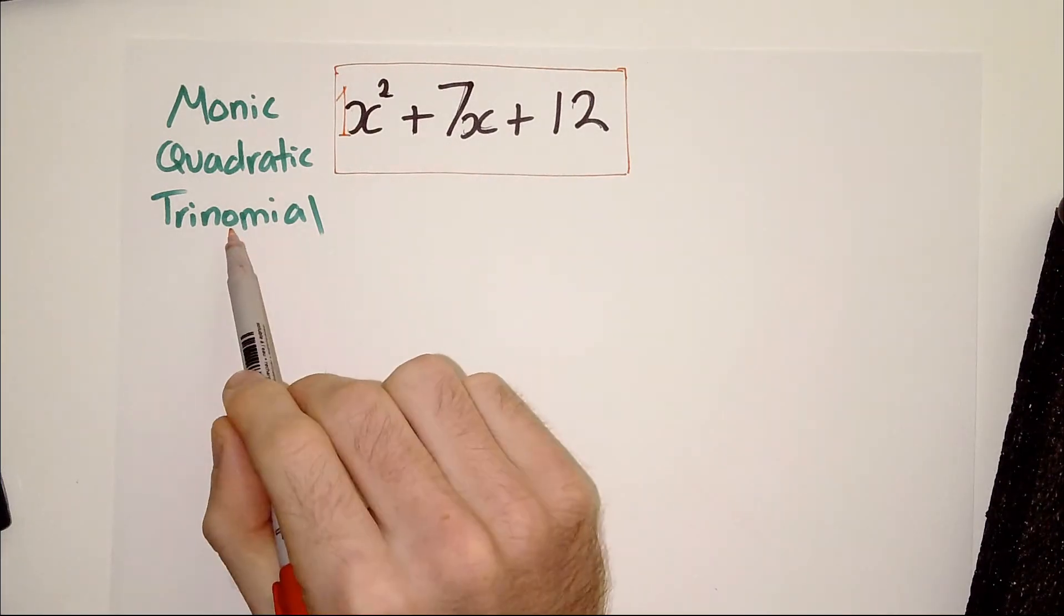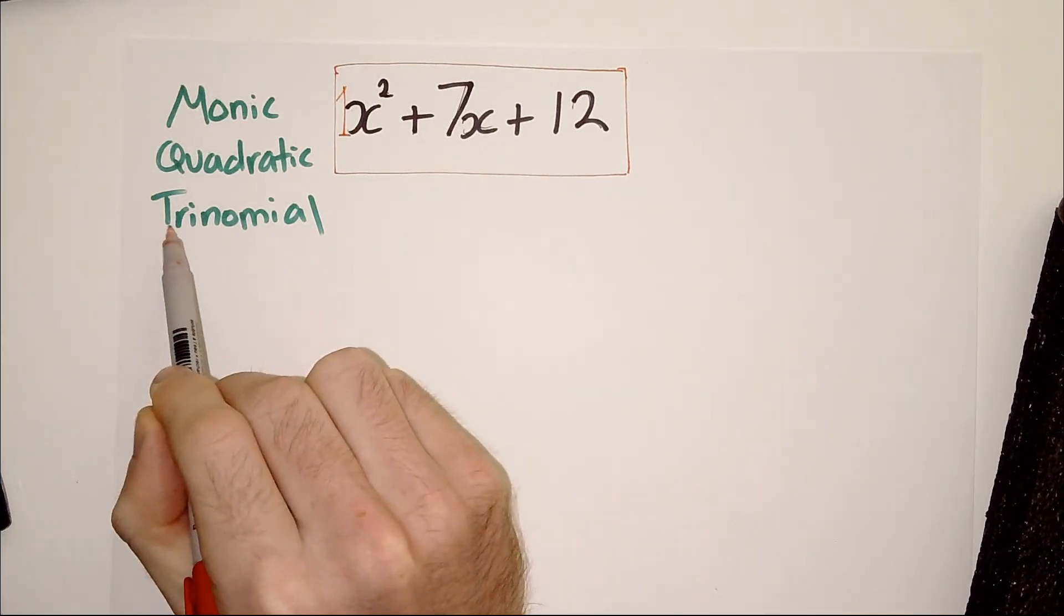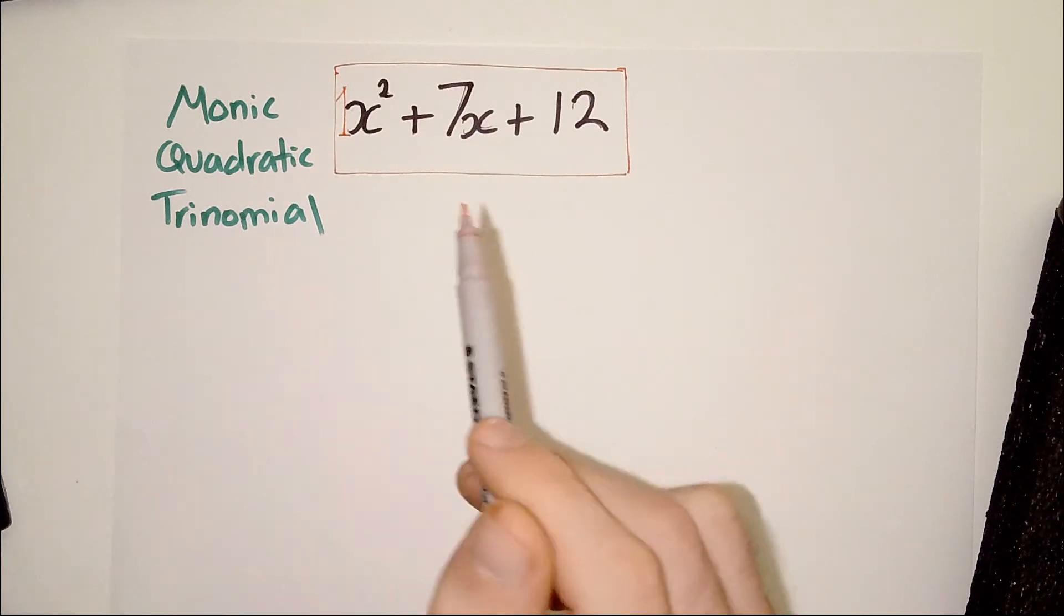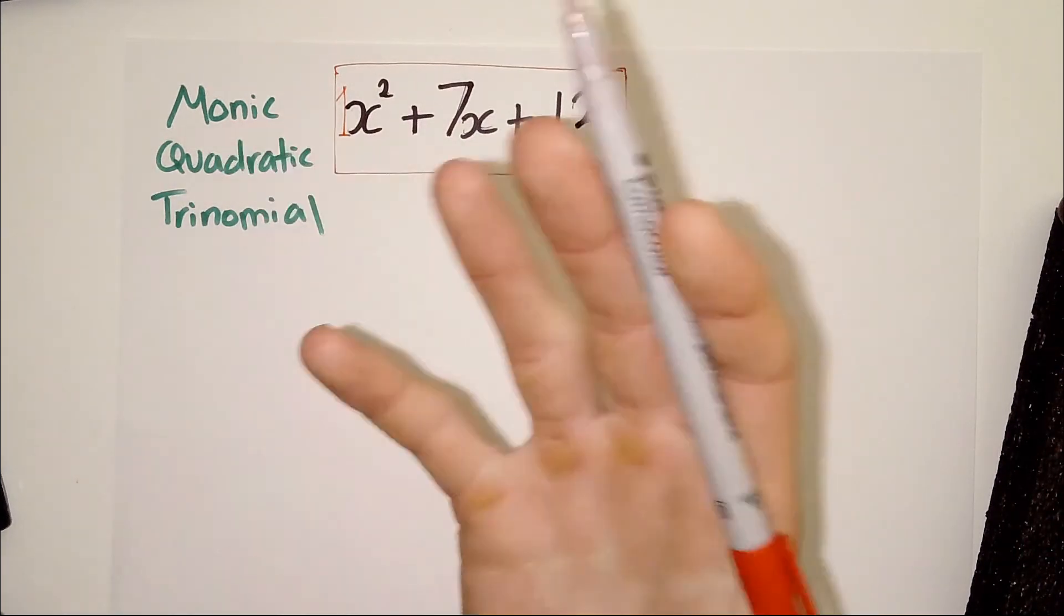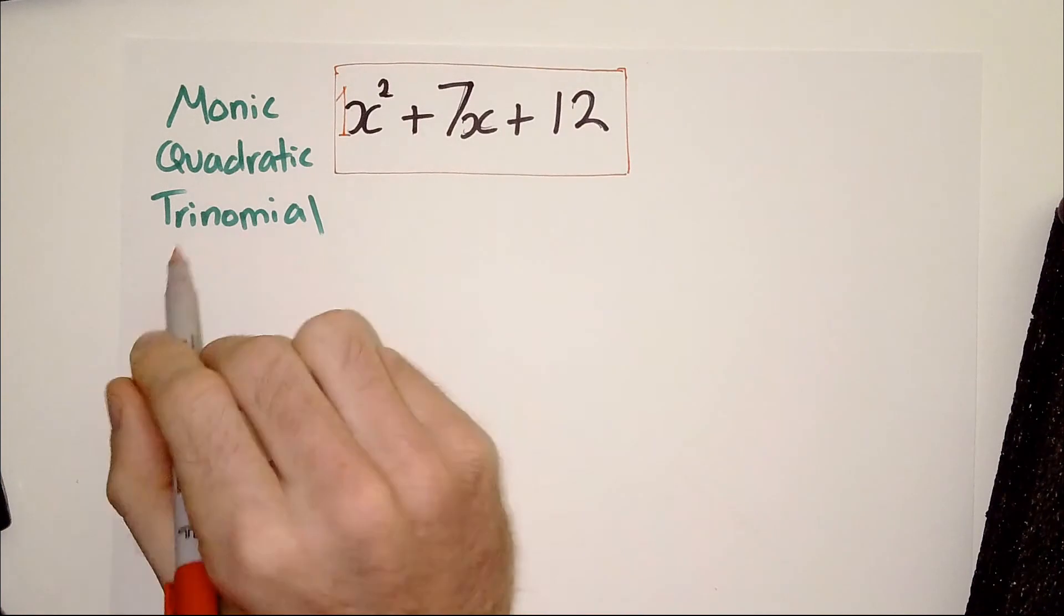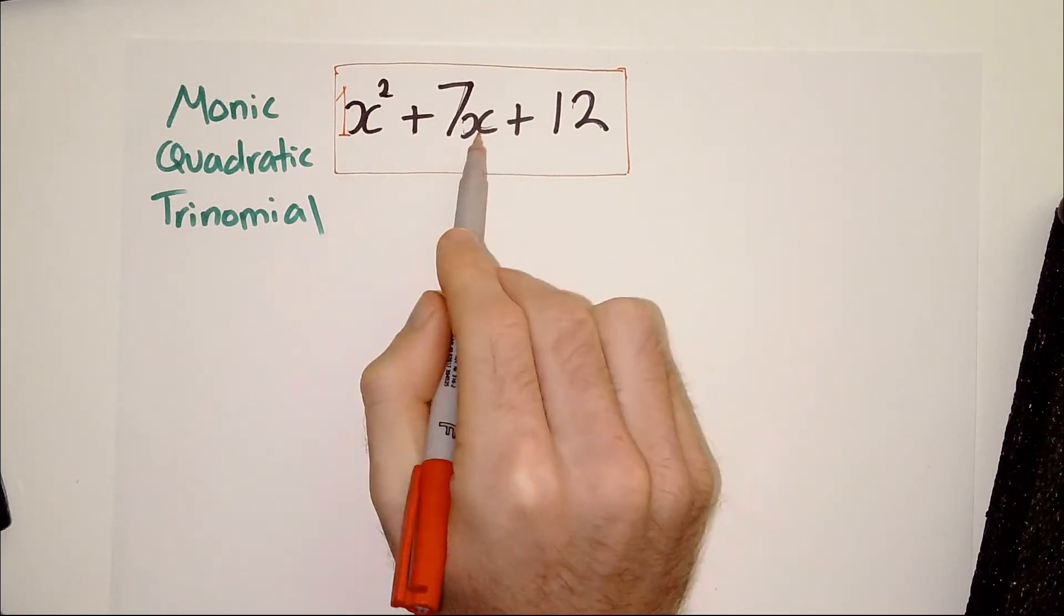And then, what is a trinomial? Well, think about the word triangle. Tri means three sides. It means three. So, tri or a trio, if you've ever been part of a trio, that's three. So, the trinomial simply means three terms. So, x squared, 7x, 12.